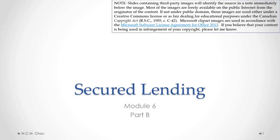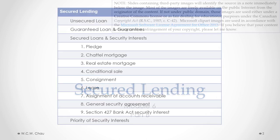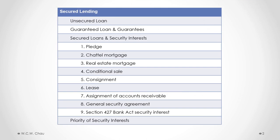Hello, it's Waylon Chow, and this is Secured Lending Module 6 Part B. In this part we will look at secured loans and security interests, specifically nine different types of security interests.